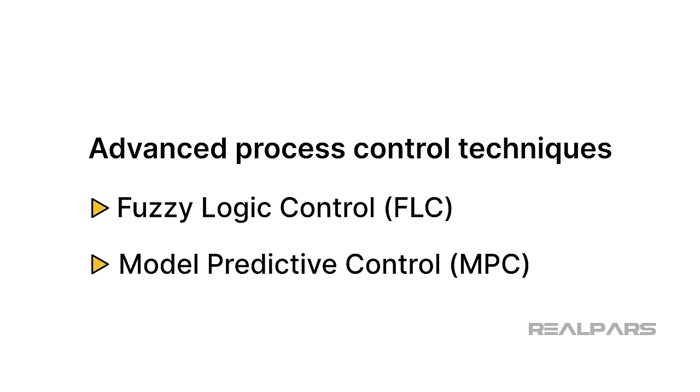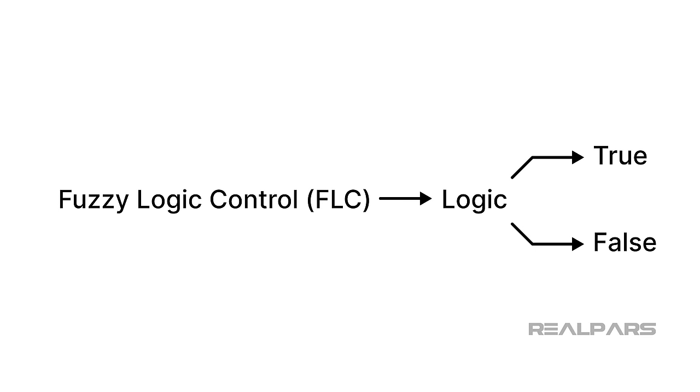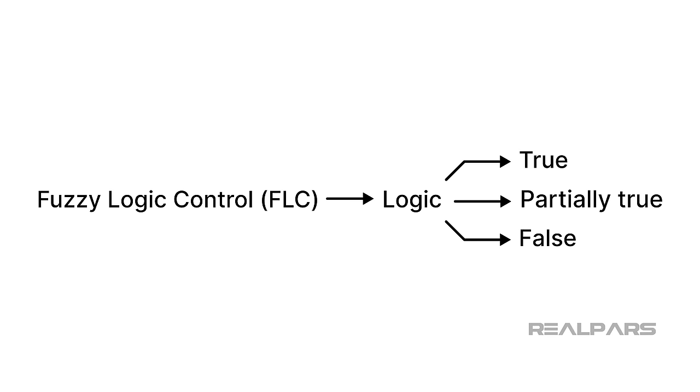We'll start with Fuzzy Logic Control or FLC. We've been taught that the binary or logic world has only two possibilities. For example, these two possibilities are 1 or 0, when 1 is true and 0 is false. Stretching the binary concept a bit further, we have lots of linguistic binary pairs, such as up or down, on or off, hot or cold. Fuzzy Logic says that there may be more than two possibilities. For example, there might be a partially true in addition to true and false.